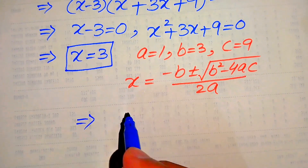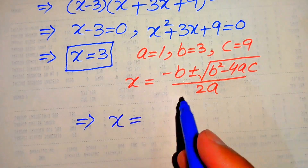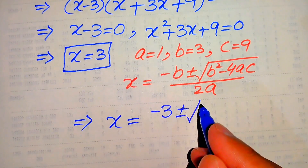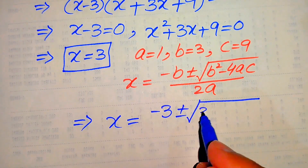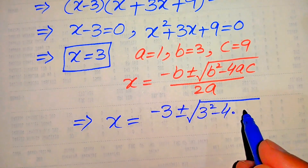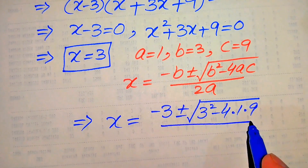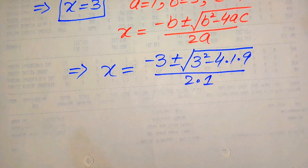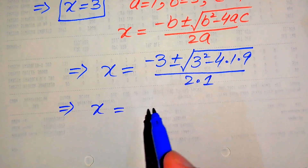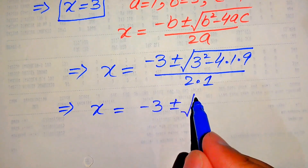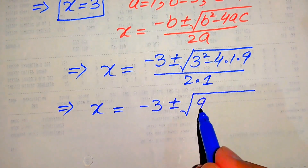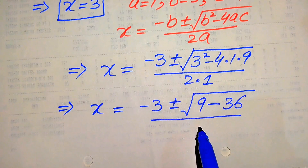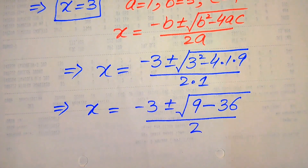Substituting the values, x equals minus 3 plus or minus the square root of 3 squared minus 4 times 1 times 9, divided by 2 times 1. In the next step, 3 squared equals 9, and 4 times 9 equals 36, so inside the square root we have 9 minus 36, divided by 2.